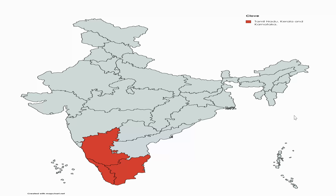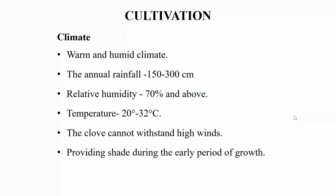In India, clove was introduced in 1880 by the East India Company and is now cultivated in Tamil Nadu, Kerala, and Karnataka.